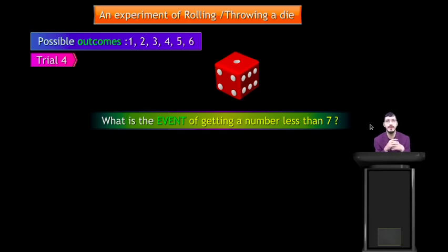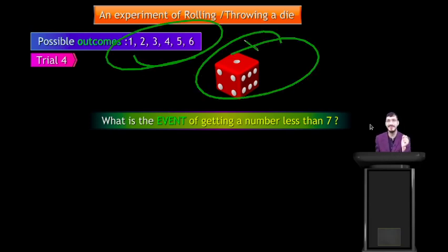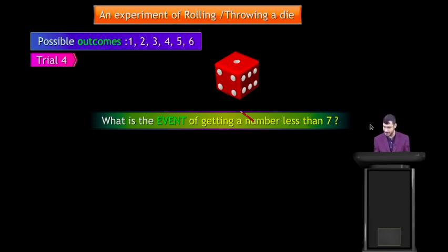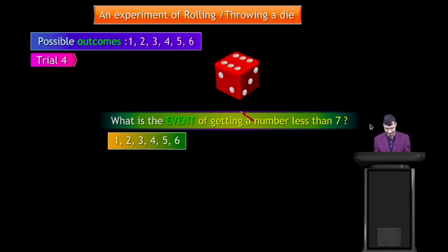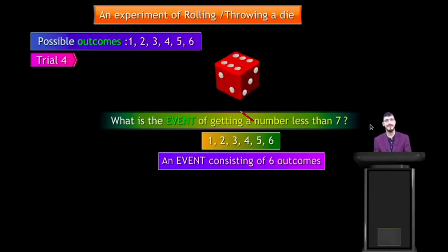What is the event of getting a number less than 7 in a die? All numbers on a die are less than 7 — so the event includes 1, 2, 3, 4, 5, 6. This is an event consisting of 6 outcomes because all numbers are less than 7. That is event E4.